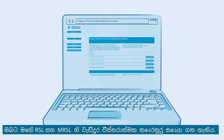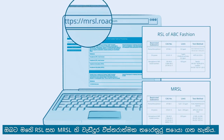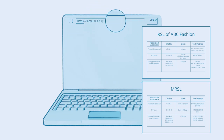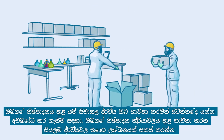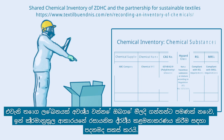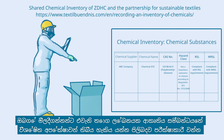You can find more detailed information on RSL and MRSL here. To understand whether you are using any restricted substances in your production, prepare an inventory of all substances in your production process. Such an inventory is not only required by your buyers but also forms the basis for managing chemicals in a systematic way. Be aware that your buyers may have specific expectations regarding the format of such inventory.